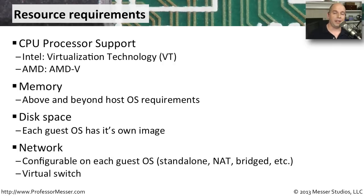Since all of these virtual machines need some way to talk to the outside world, we have to configure network settings for them as well. You can usually configure a virtual switch inside your hypervisor to set up a standalone network connection, one where just the virtual machines talk to each other, or one that is NATted or bridged out to the physical network so you can even access the internet from each one of those virtual machines.